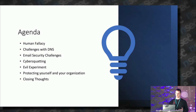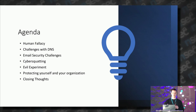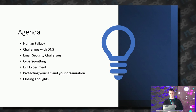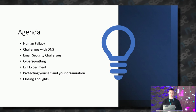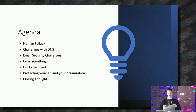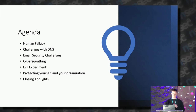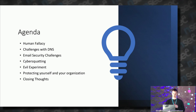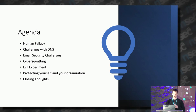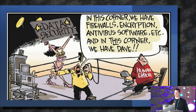So what's on the agenda? I want to talk quickly about human fallacy and the role it plays in some attacks. I want to talk about DNS specifically, and email security challenges. We're going to take a closer look at cybersquatting — maybe a refresher for some of you, maybe some new angles. Then I want to bring you on the inside of a little evil experiment I conducted over the last 45 days. Then we'll talk about protecting ourselves and our organizations, and some closing thoughts.